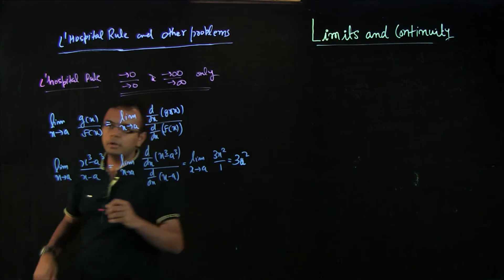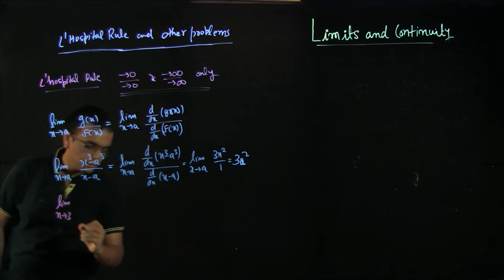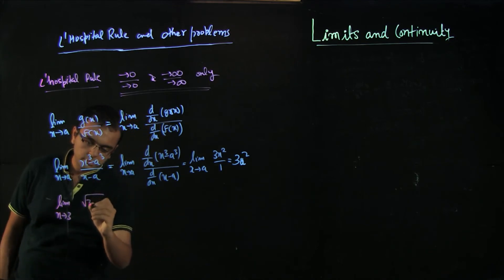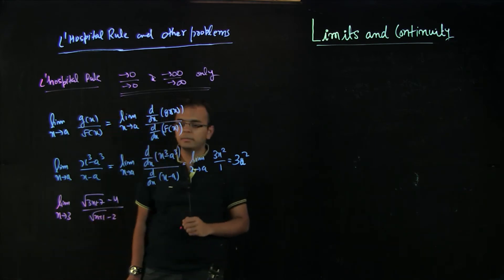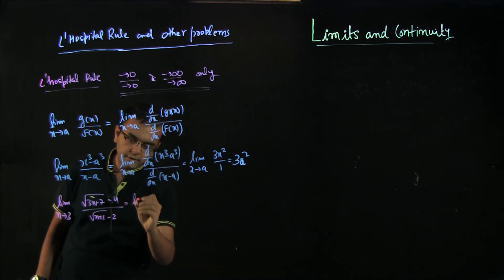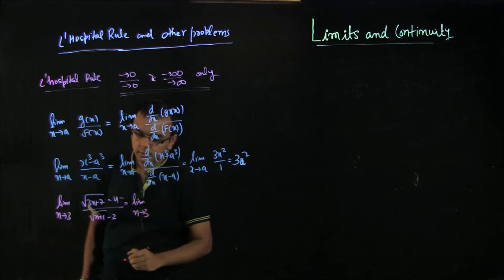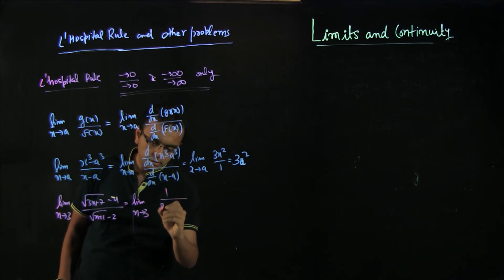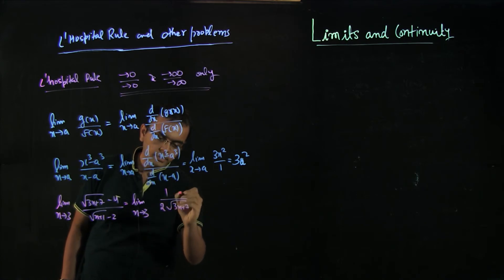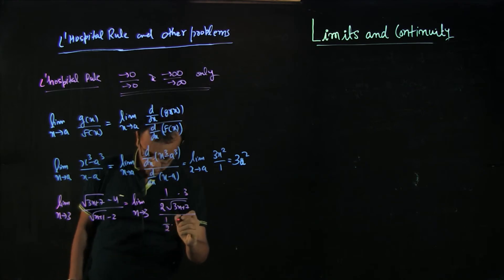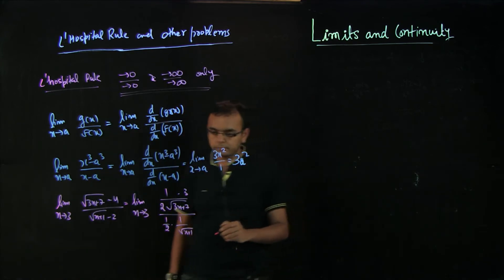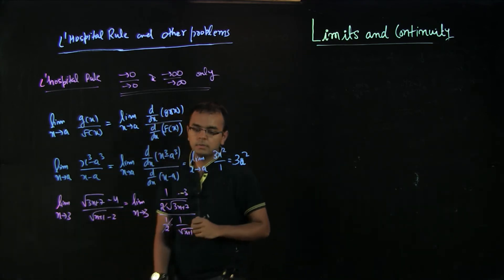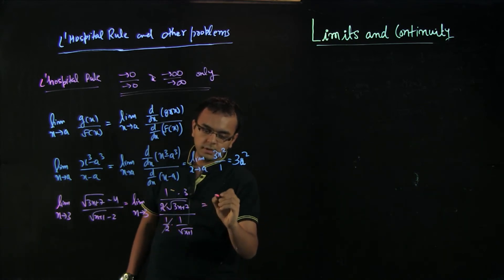You can do another problem on L'Hopital rule: limit x tends to 3, root of 3x plus 7 minus 4 divided by root of x plus 1 minus 2. Again, if you substitute x equal to 3, you will get a 0 by 0 problem. If you take derivative of the numerator, that will come out to be 1 by 2 root 3x plus 7 times 3 divided by 1 by 2 into 1 by root of x plus 1. If you substitute the values, this will get cancelled and you will get the answer as 3 by 2.